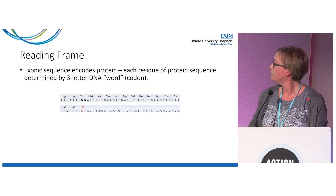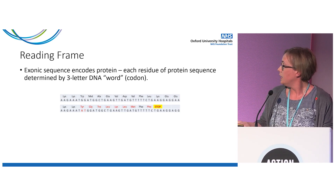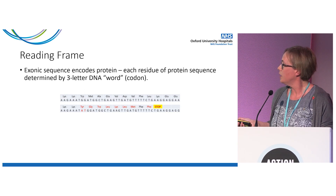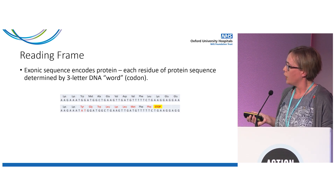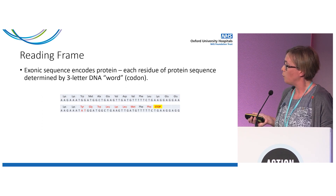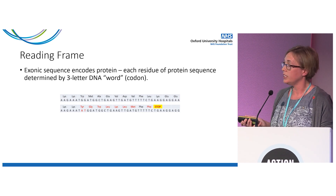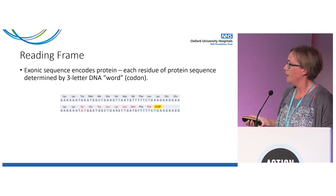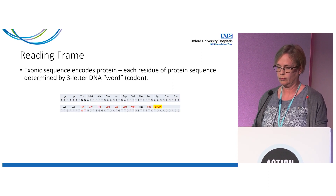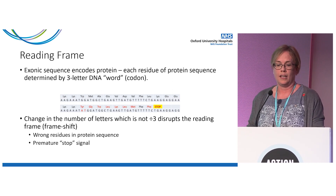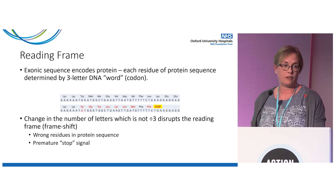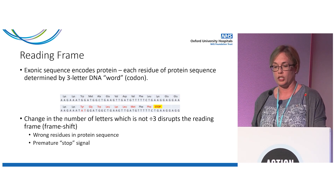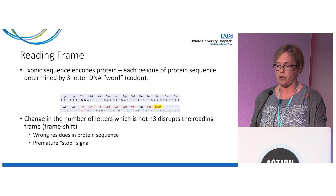Because you've added in some extra letters, it actually shifts the reading frame, so all the threes are moved along. You get lots of different protein residues encoded — the majority of them will be completely different from what they should be, and ultimately you create a signal that tells the protein to stop. So if you change the number of letters by a number that's not divisible by three, this disrupts the reading frame — what we call a frameshift — giving you the wrong residues and a premature stop signal.